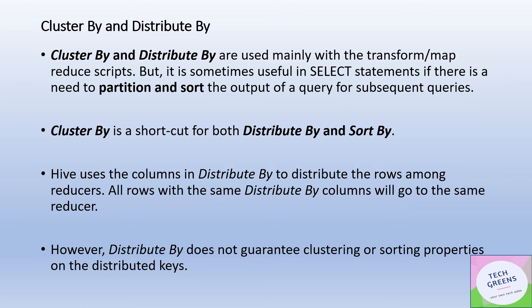To cover both distribution and ordering, we can use SORT BY along with DISTRIBUTE BY on the same column, so that the rows distributed to the reducers are also sorted on that column. The combination of DISTRIBUTE BY and SORT BY can be achieved using a single clause: CLUSTER BY. CLUSTER BY is a shortcut for DISTRIBUTE BY and SORT BY. If you do a CLUSTER BY on column C, all rows with similar values of C will go to the same reducer in an ordered way.